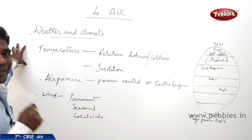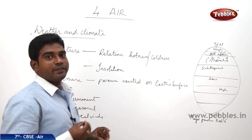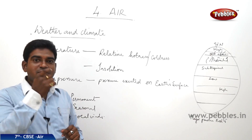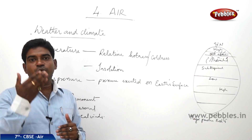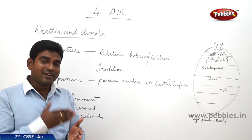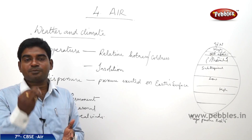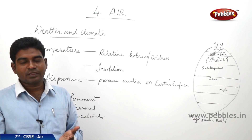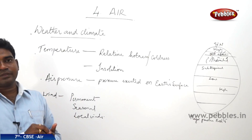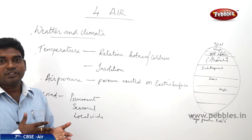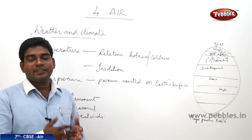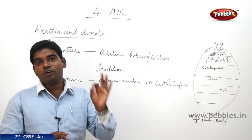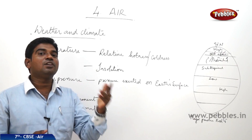Now let us learn about weather and climate. Weather is the atmospheric condition of a place for a very short period of time — from six hours to 24 or 48 hours. The weather is the state of the atmosphere of a place, whether it can be cold, hot, rainy, windy, or sunny. But if the same type of condition is present for over three months or six months, then we call it the climate of a place. Climate is the state of the atmosphere for a very long period of time.